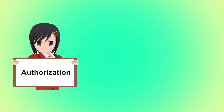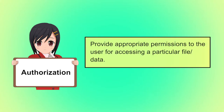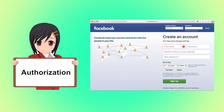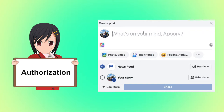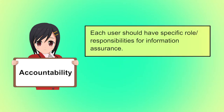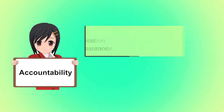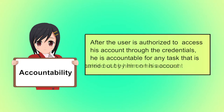Second is authorization. It is the process of ensuring that an employee has enough access rights to particular information so that he can perform intended actions. For example, once you enter valid credentials to your Facebook account, you are authorized to perform all that you have permission to do — like post pictures, post videos, post statuses, etc. Accountability focuses on the fact that any actions taken by an entity can be traced uniquely to that entity. After the user is authorized to access his account through credentials, he is accountable for any task carried out by him on his account.